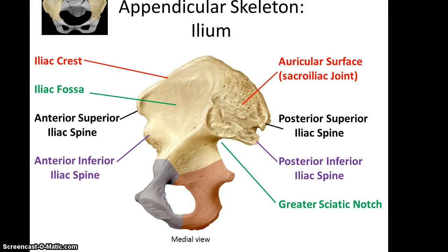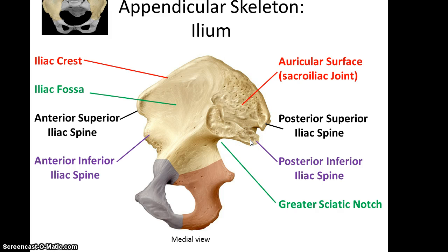Looking at the ilium from a medial view — from the midline toward the ilium — you see a number of interesting features. There's the auricular surface, where the ilium is articulating with the sacrum. On the auricular surface are the posterior superior iliac spine and the posterior inferior iliac spine. Note that even though the names seem long, they're basically giving you directions to find the spine — posterior and superior versus posterior and inferior. Inferior to that is the greater sciatic notch.